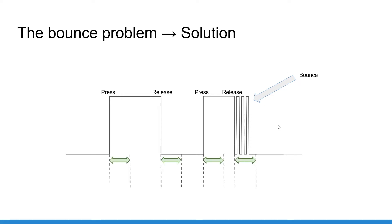The solution is that when we detect a change of state, we simply ignore the following state changes for the next X amount of time — we will use 50 milliseconds as a good standard value. So when a state change is detected, we ignore the next 50 milliseconds, allowing all the bounces to pass unregistered in the code.